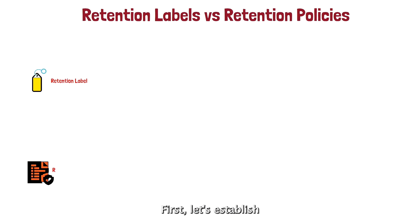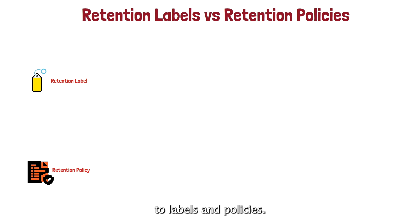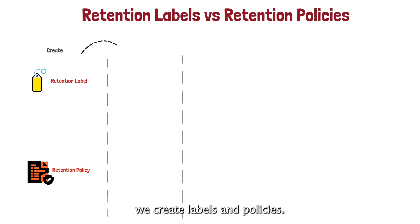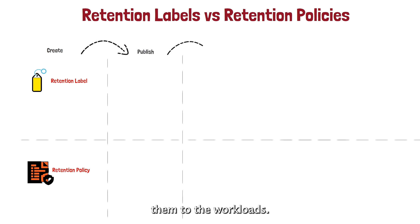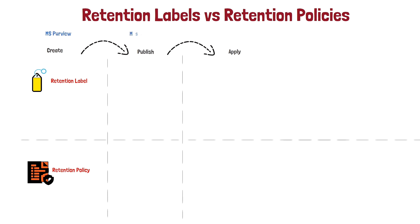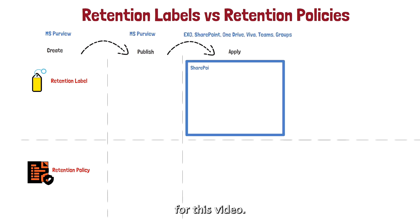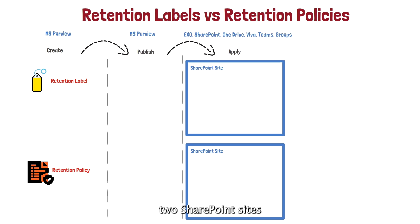First, let's establish the events that can happen to labels and policies. First, we create labels and policies, then we publish them to the workloads, and finally we apply them. I'm going to use SharePoint for this video, and here we have two SharePoint sites.